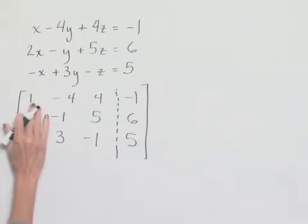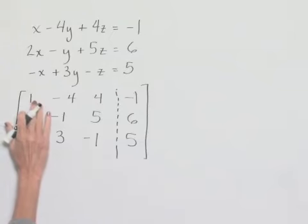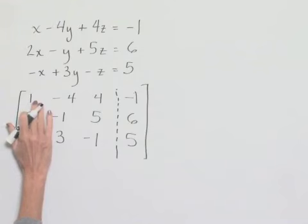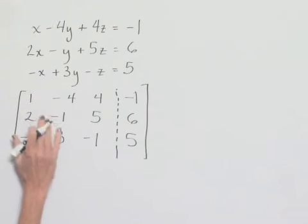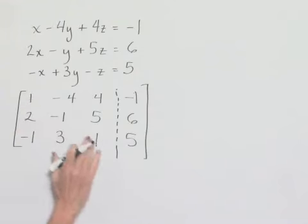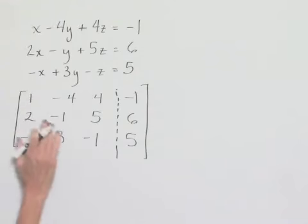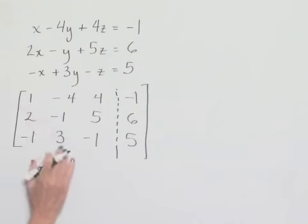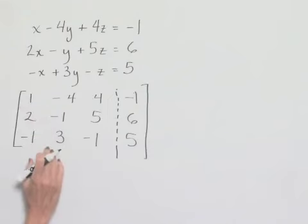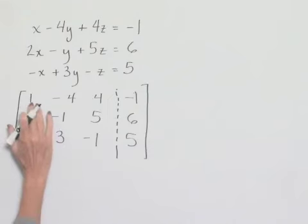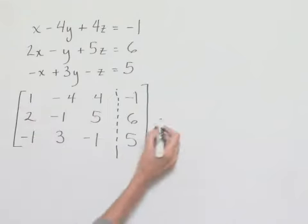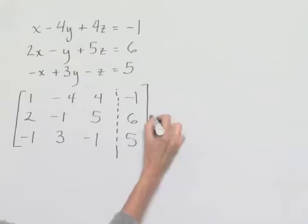Notice that in our upper left-hand corner we already have a value of 1 — that's what we want. We want to end up with 1's along our diagonal and 0's below the diagonal in the lower portion. So we've already got our first row as we want it.